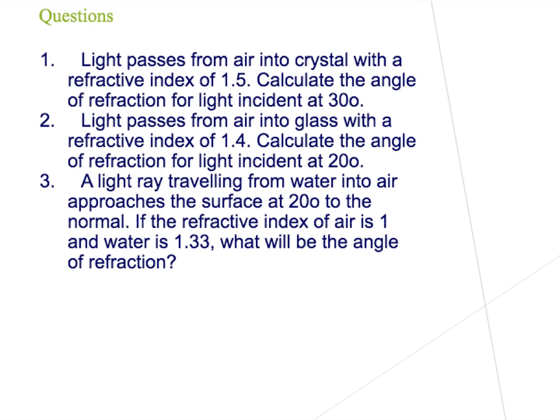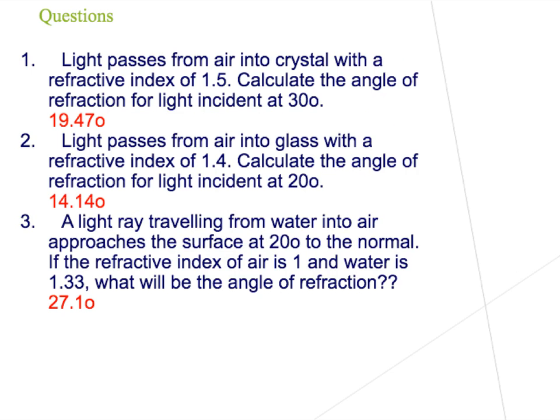Here are three further questions: light passing from air to crystal with an overall refractive index of 1.5, calculate the angle of refraction for light incident at 30 degrees; then for light incident at 20 degrees; and finally calculate the overall refractive index. The answers are: first, 19.47 degrees; second, 14.14 degrees; and finally 27.1 degrees.